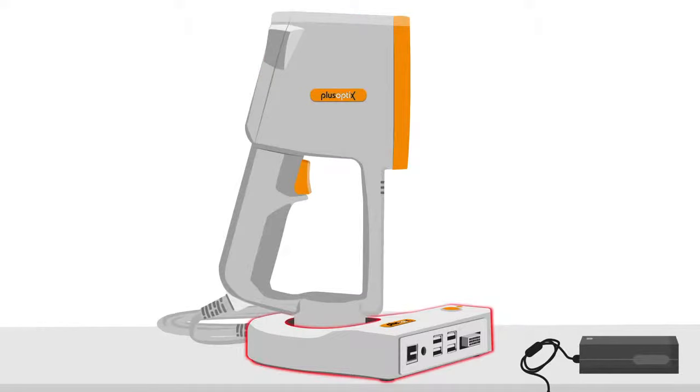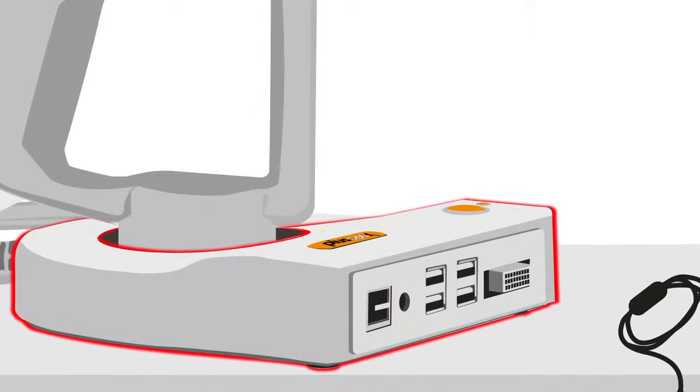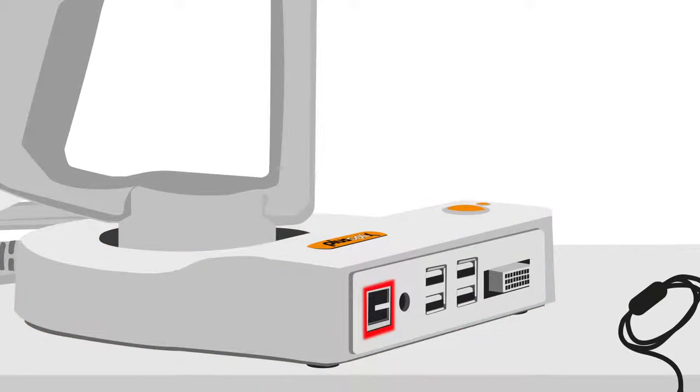Now, let's look at the cradle. Starting on the left, there is an RJ45 connector for the connection to your electronic medical record. Next is the 12V power supply connection.